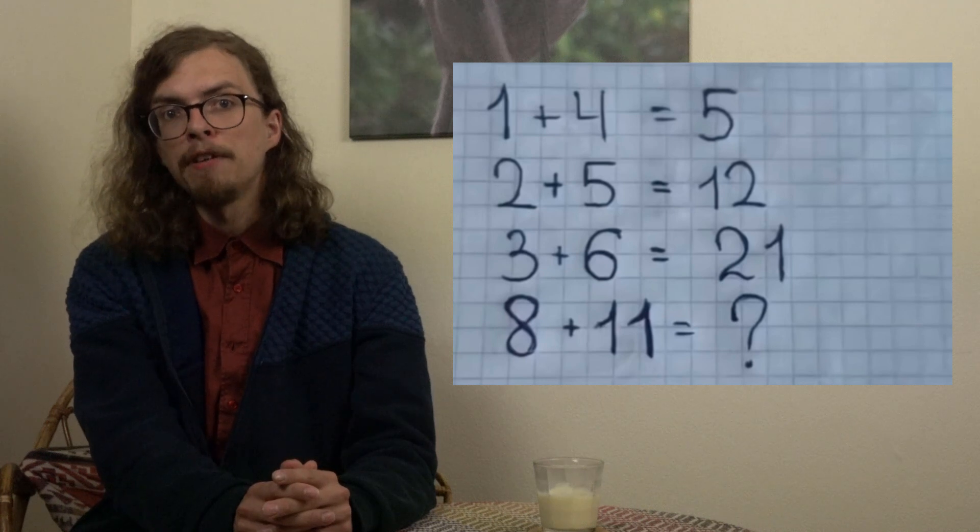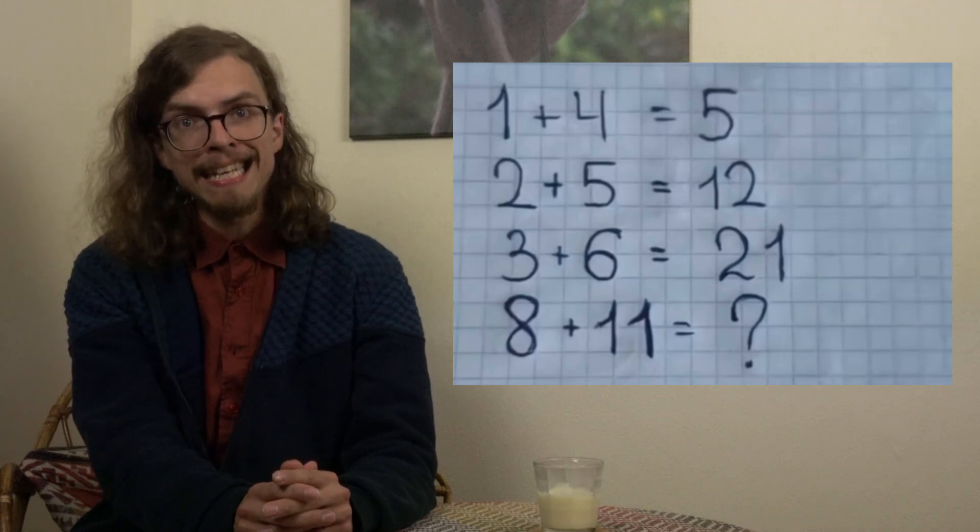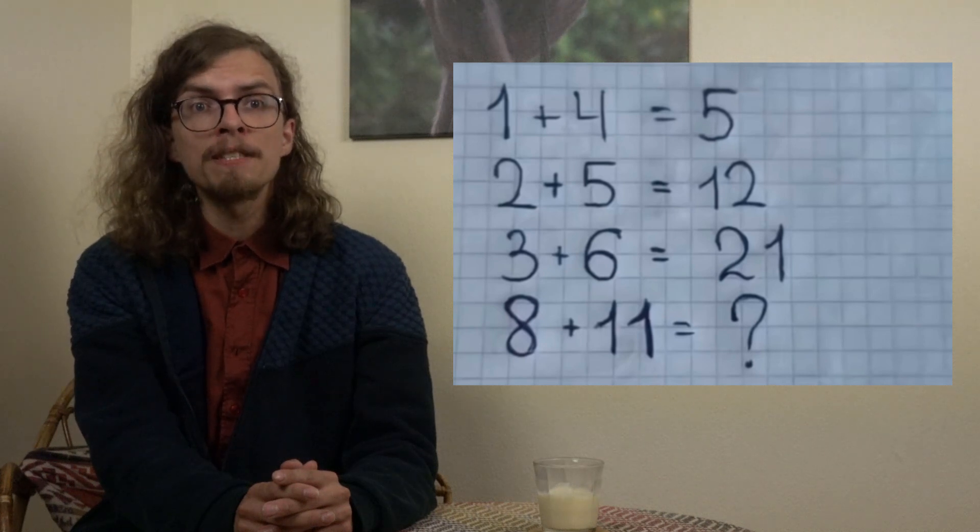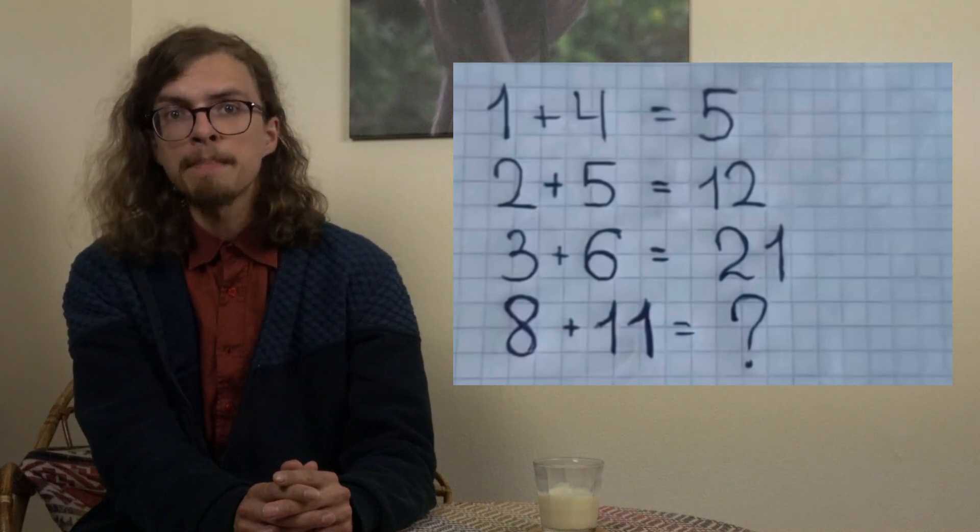8 plus 11 equals 19. Don't let idiots or even people with ill intentions rework common sense for you. Not even as a mental exercise.